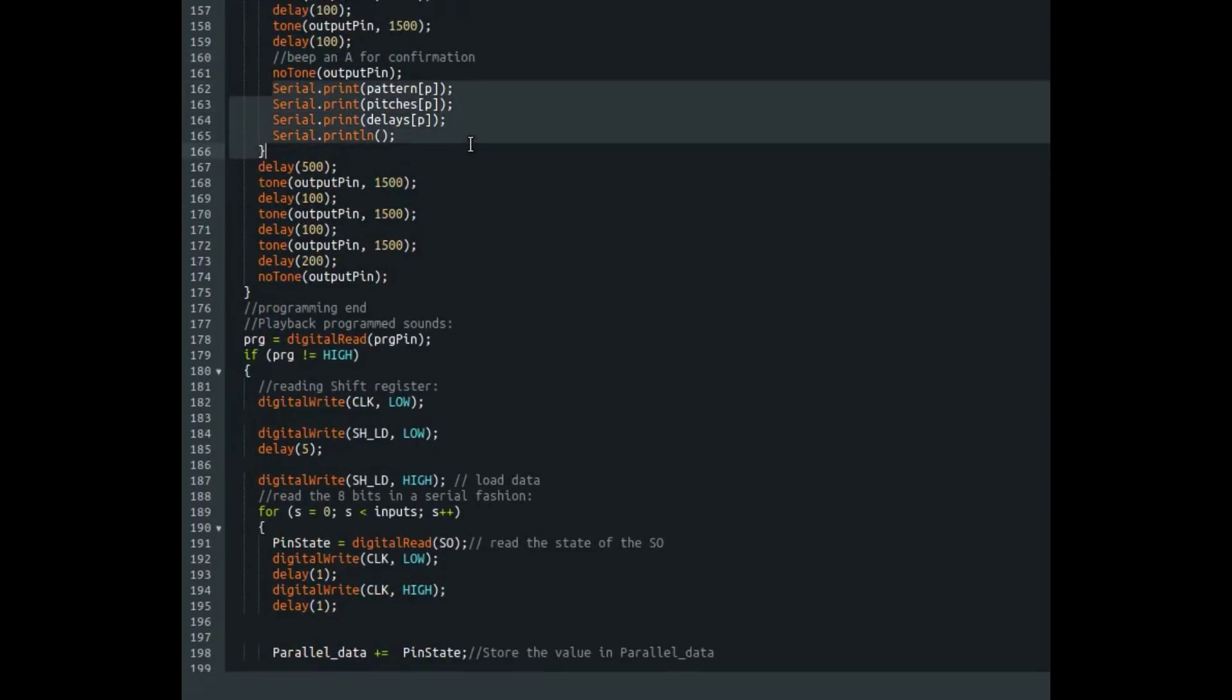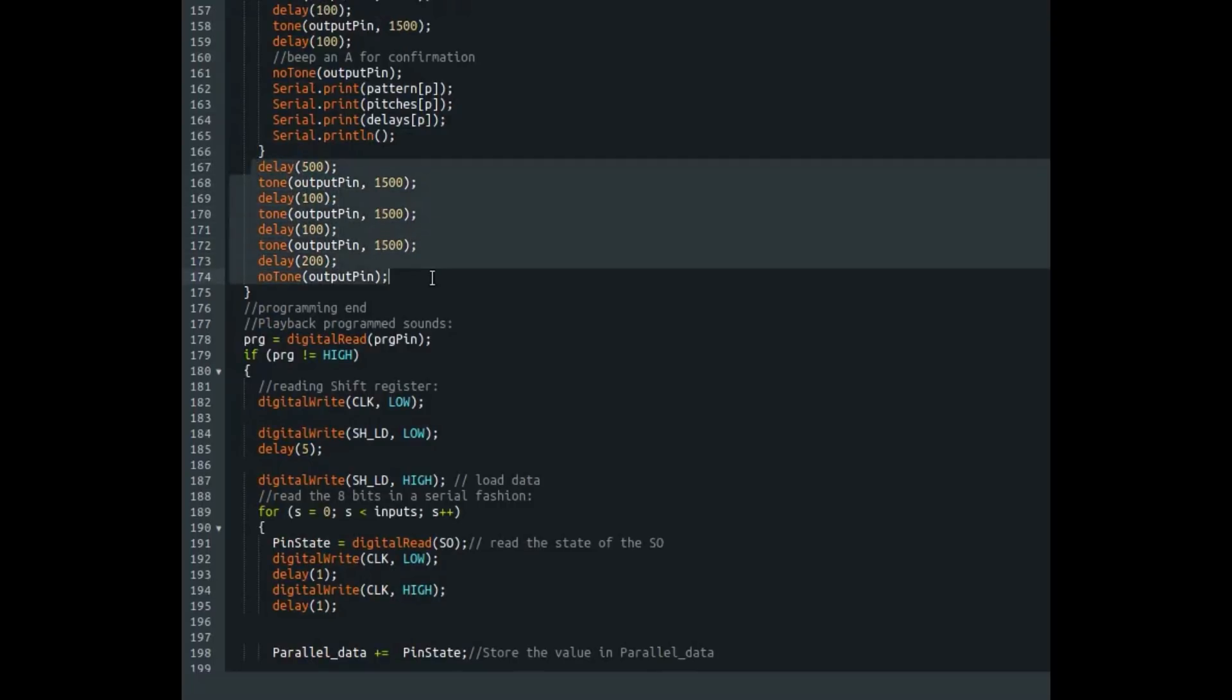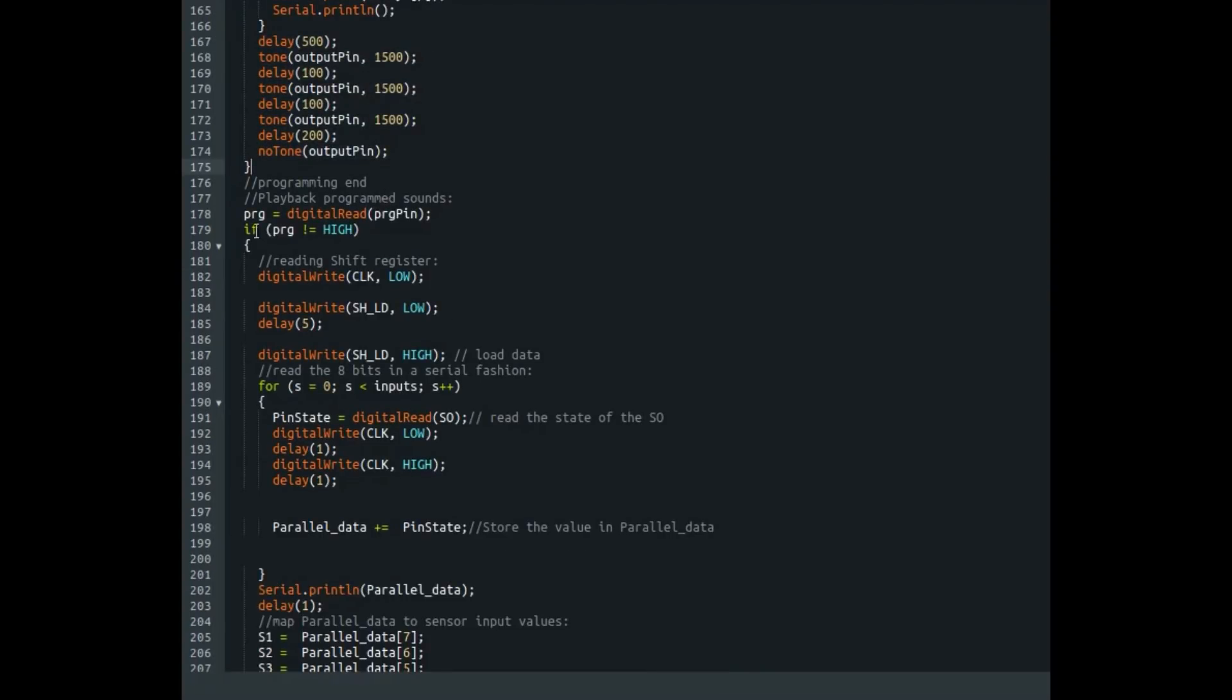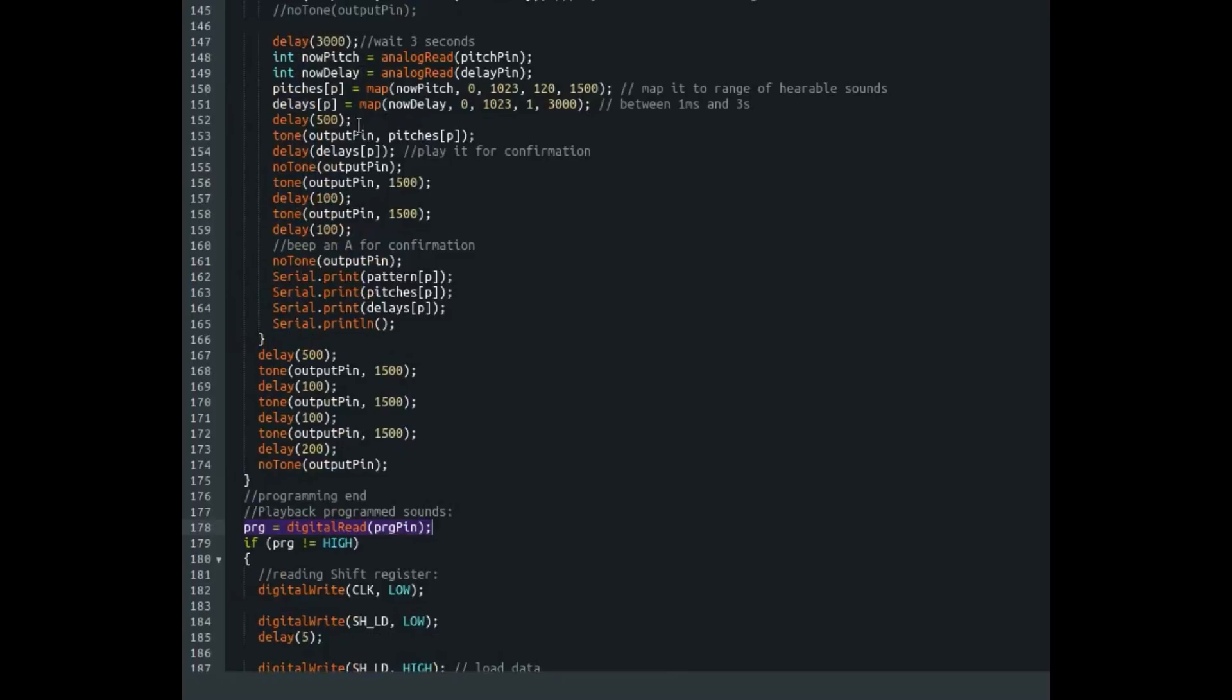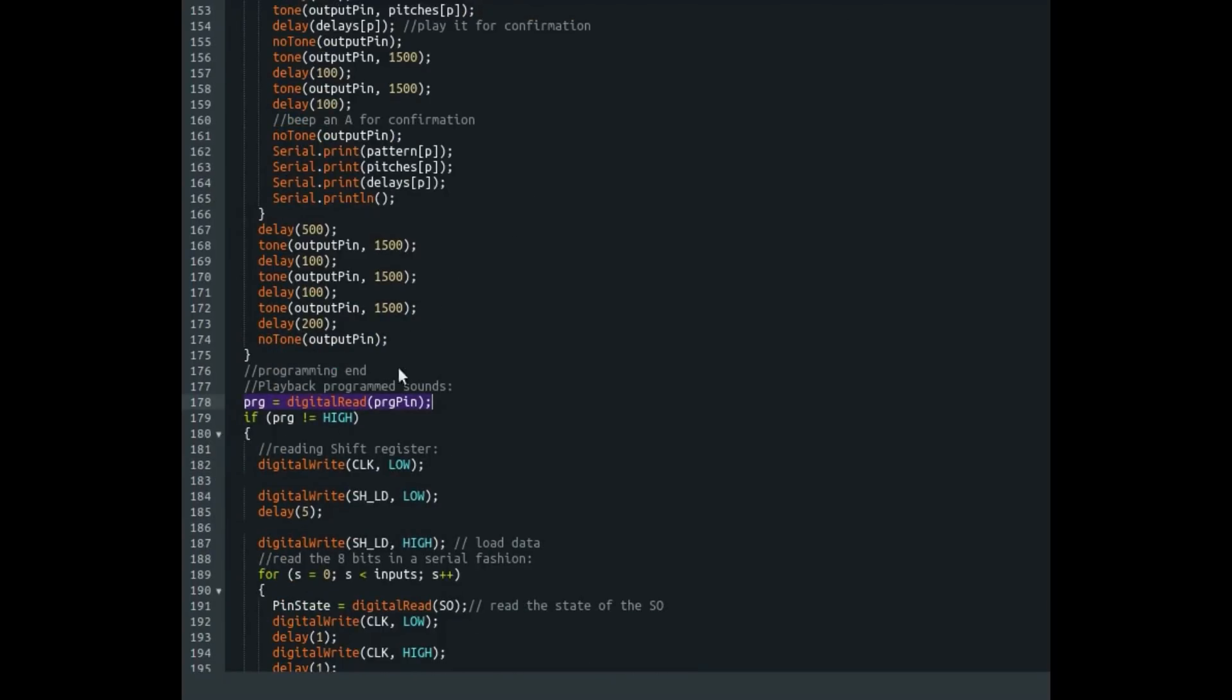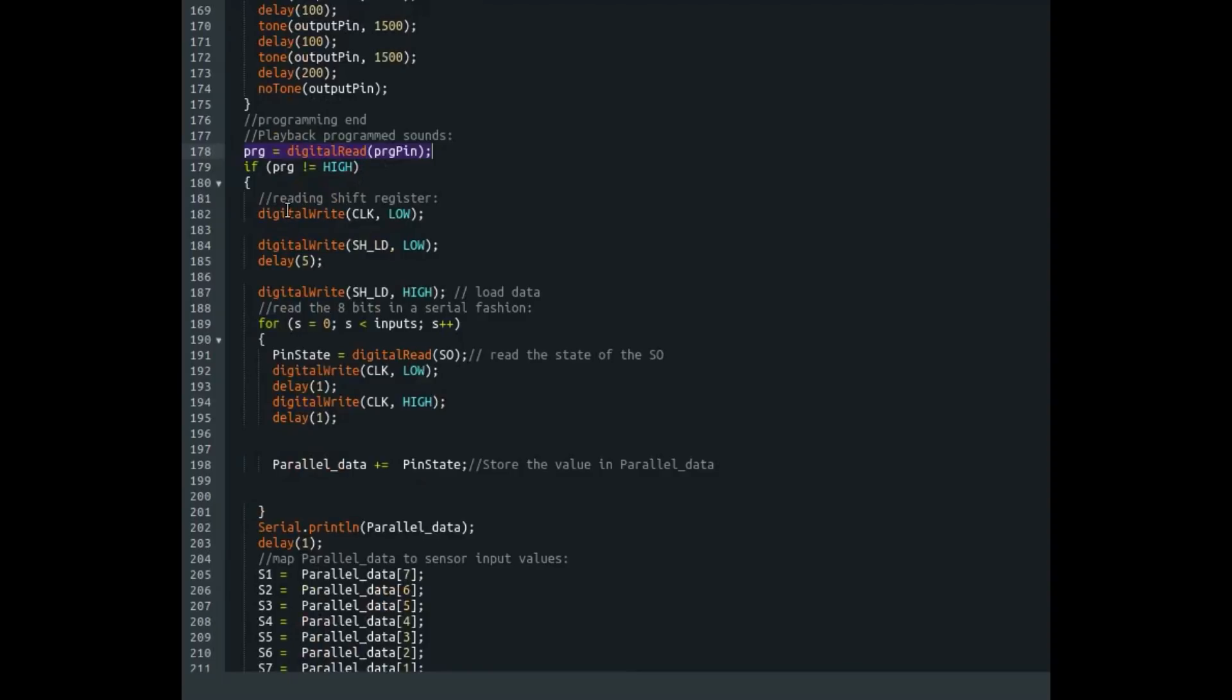This is just for serial debugging. And when all the iterations are finished, so eight tones are programmed, it will beep three times. So you know, OK, everything is set. Then it will check again if the programming pin is still in programming mode. If that is true, you can set a new pattern. If anywhere in a point around this part of the program you have changed that pin, it will go to the playback mode.